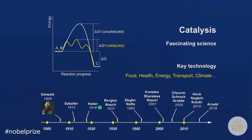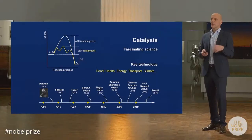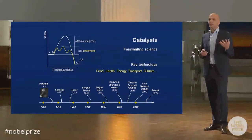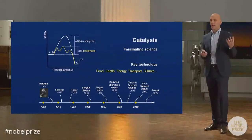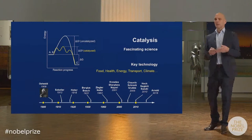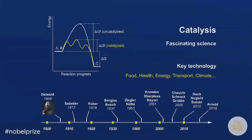Bergius developed coal hydrogenation processes, again with the help of heterogeneous catalysts. A big change then occurred in 1963 when the first Nobel Prize was awarded for work on homogeneous transition metal-catalyzed reactions, and the starting point happened to have occurred in Mülheim, in my institute, the Max Planck Institute for Kohlenforschung, when Carl Ziegler discovered homogeneous transition metal complexes that catalyze polymerization reactions of ethylene and propylene. That marked the beginning of homogeneous transition metal catalysis.